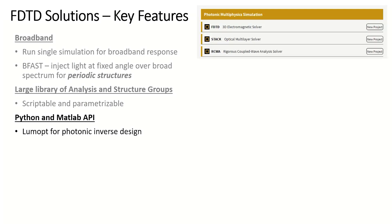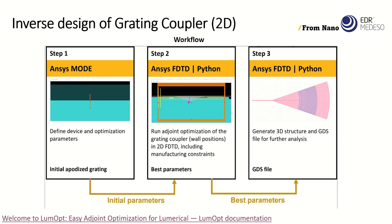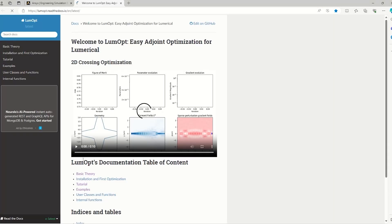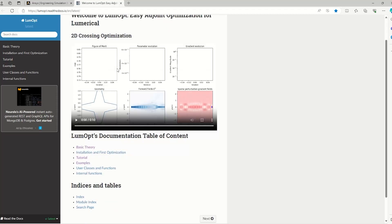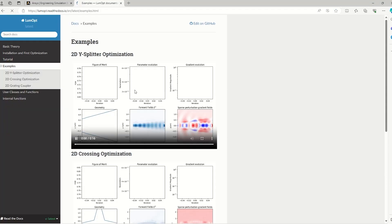With the Python API, you can also do photonic inverse design using the LumOpt Python package. Here is the workflow for optimizing a grating coupler for photonic integrated circuit applications, which you can find on the Knowledge Base. This includes the use of a Python script using LumOpt, which uses the adjoint method for optimization, and there is lots of technical support on how to use this.